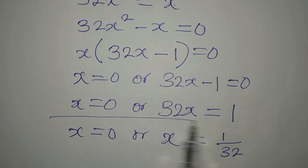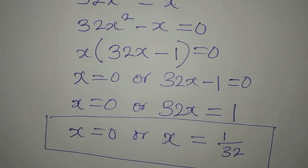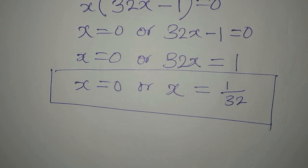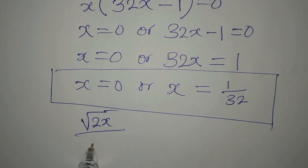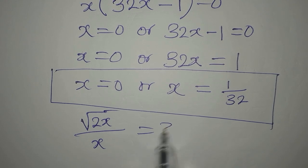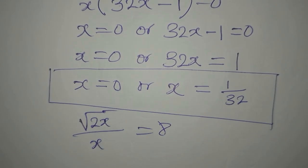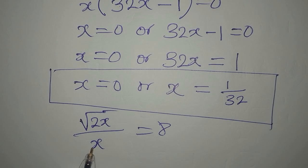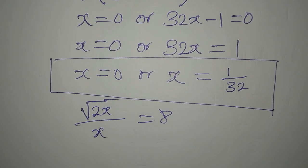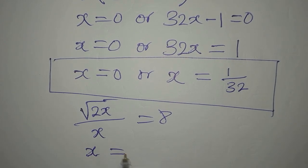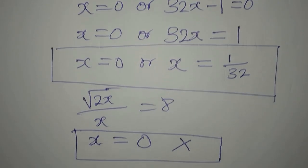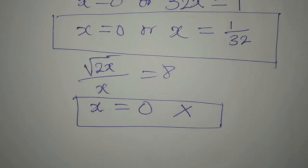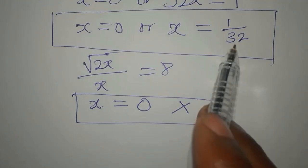So we have solved this very quickly. But then, do you think these two values of x will satisfy the equation root 2x over x equals 8? As a matter of fact, if we put x as 0, we are going to be dividing by 0, and dividing by 0 is undefined. So our x to be equal to 0 has to be rejected, because it is not a solution. Now let's pick the next one, which is 1 over 32.